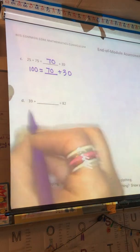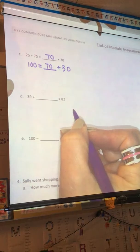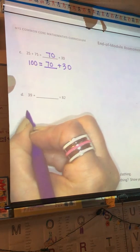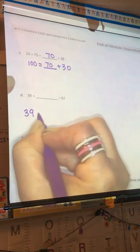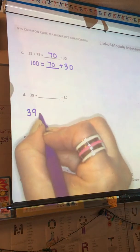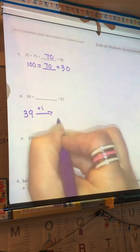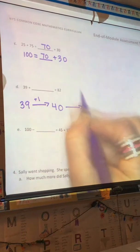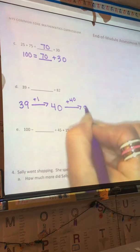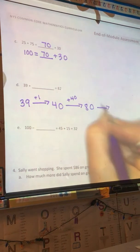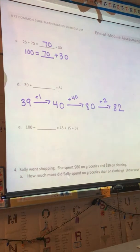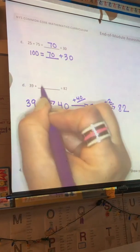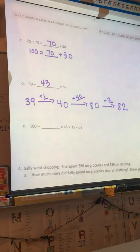Letter D. 39 plus something equals 82. I think I'd like to use the arrow way to solve this problem. So, I'm going to start with 39. And anytime I can get to an even 10, I'm going to go ahead and do that. So, I'm going to start by adding 1. 39 plus 1 is 40. And I'm going to add four 10s so I can get to 80. So, 40 plus 40 is 80. And now I just need to add two 1s. And that will get me to 82. So, I can see that I have added 40, 41, 42, 43. 39 plus 43 equals 82.